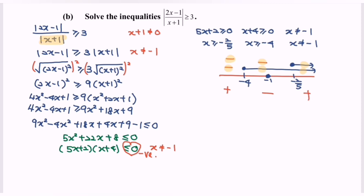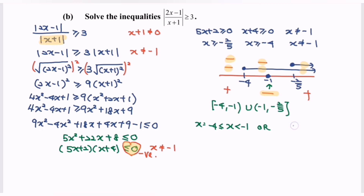Now we select the region — refer to the sign, which is negative here. Kindly take note that negative 1 is not included. So the solution is: from negative 4 to negative 1, union negative 1 to negative 2/5, where negative 1 is not included. For the solution set: x such that x is greater than or equal to negative 4 and less than negative 1, or x is greater than negative 1 and less than or equal to negative 2/5. Here we have the interval form and here the set notation.